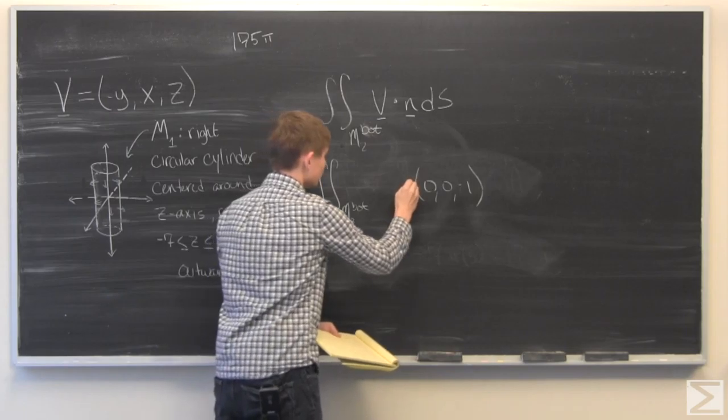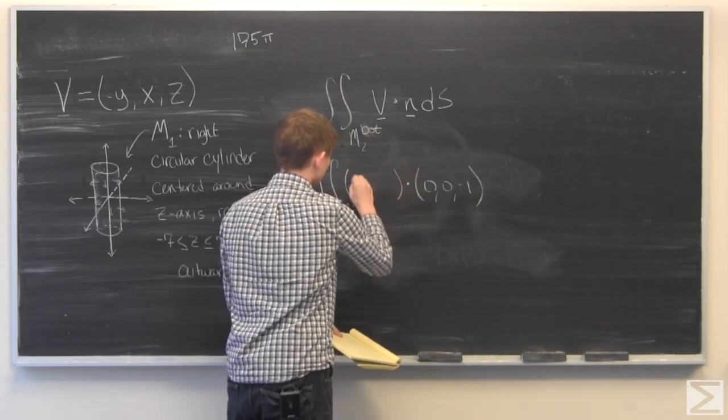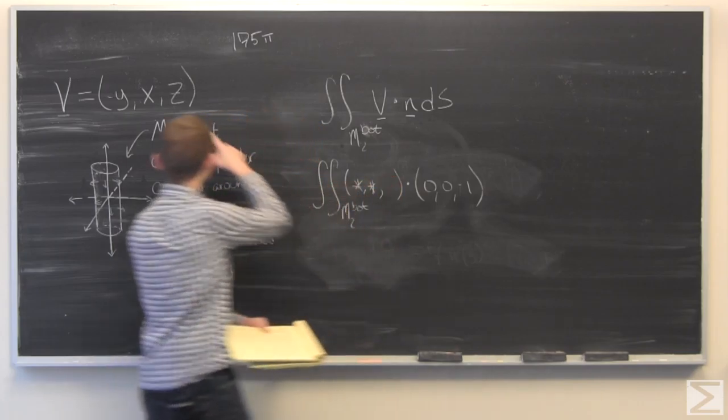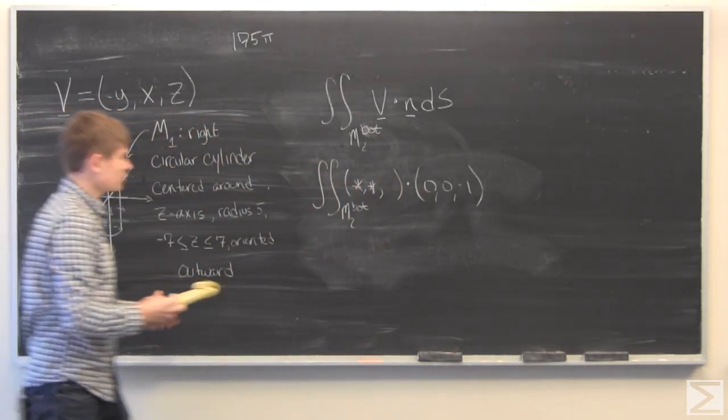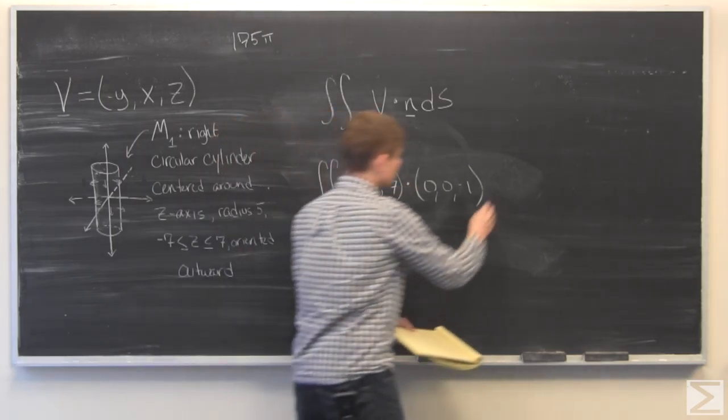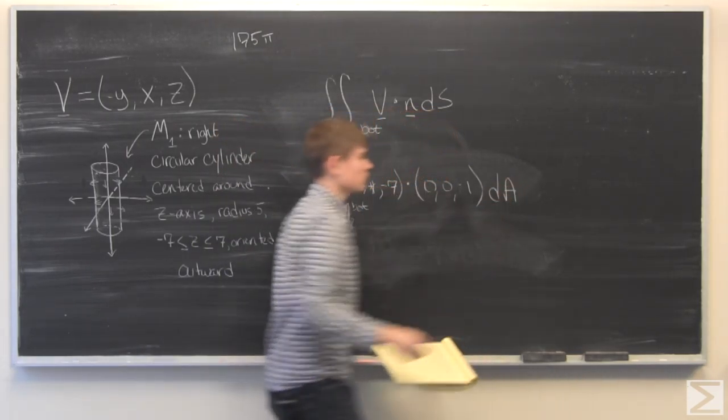And this is dotted with, don't care about the first two again, and then Z. And in this case Z is negative 7, so we can just plug that right in. It's constant at negative 7, and same thing, we can just put dA there.